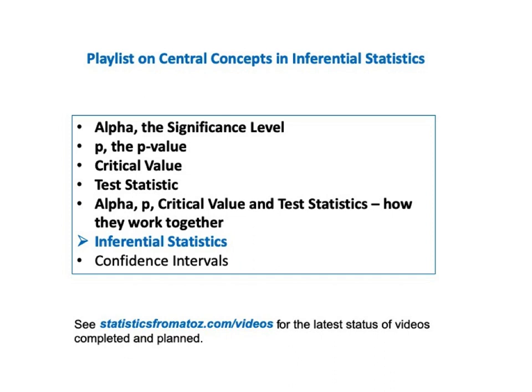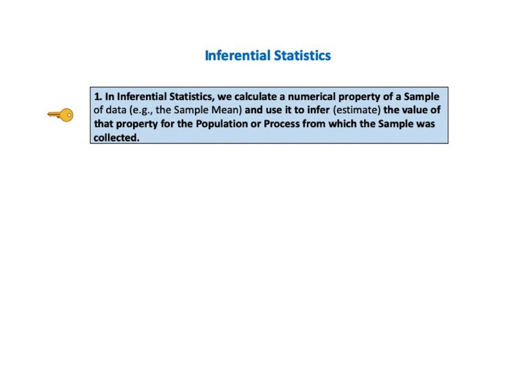See StatisticsFromAtoZ.com/videos for the latest status of my videos, those completed and planned. As usual in the book and in these videos, we'll start by going quickly through a list of keys to understanding, or KTUs. This will give you the overall picture of the concept on a single page, and then we'll go into detailed explanations of each of the keys. For this video, there are five KTUs.